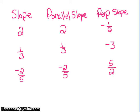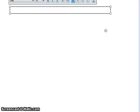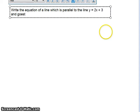If we want to write the equation of lines using parallel and perpendicular, I'm just going to type it because it will be faster. Write the equation of a line which is parallel to the line y equals 2x plus 3, and goes through the point 4, negative 2.